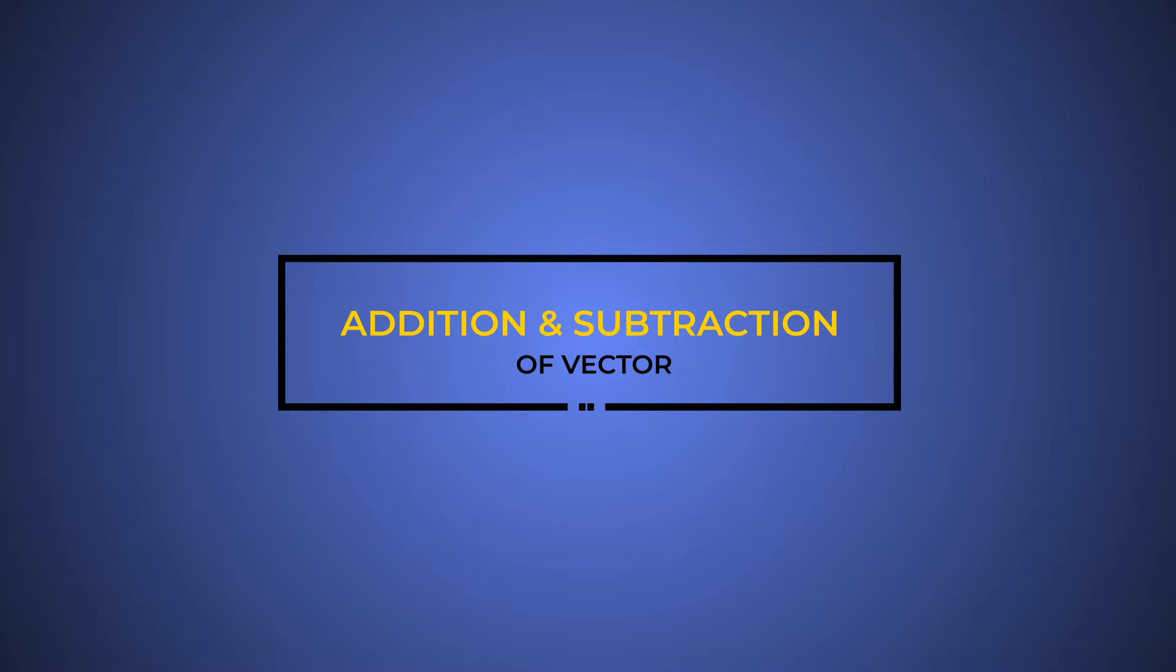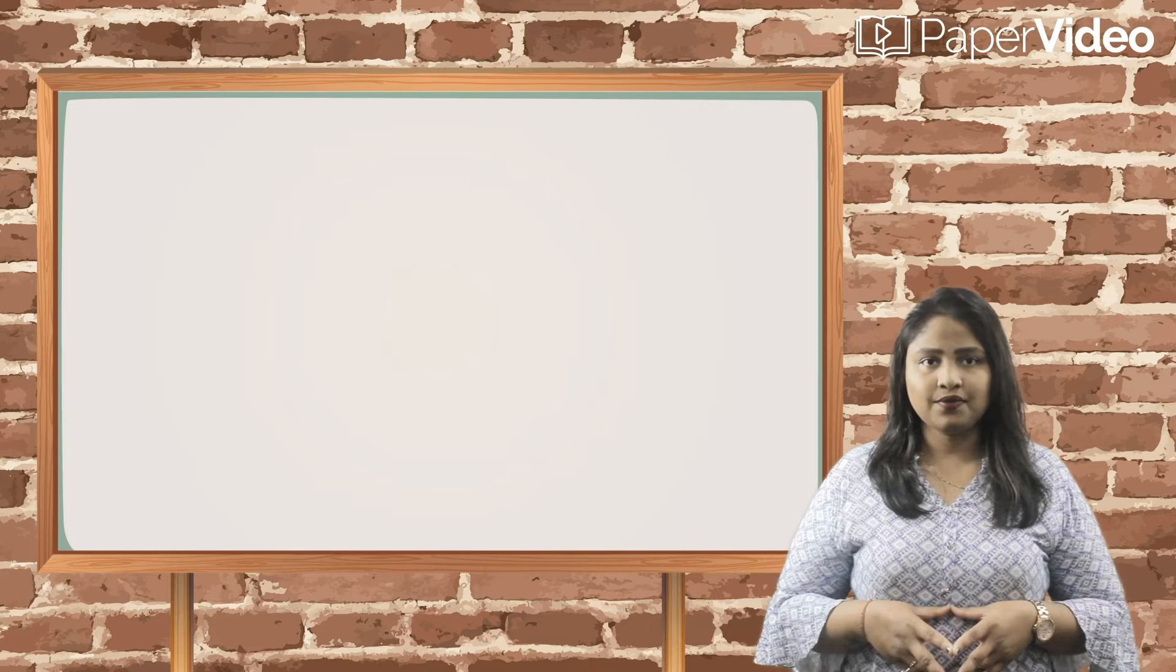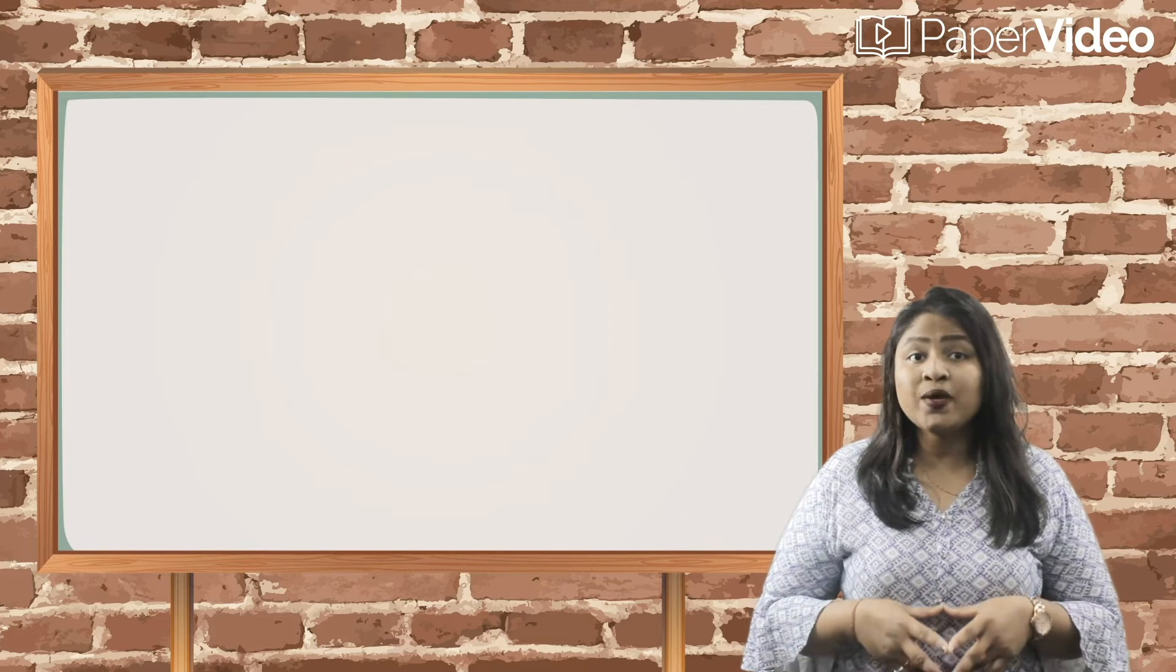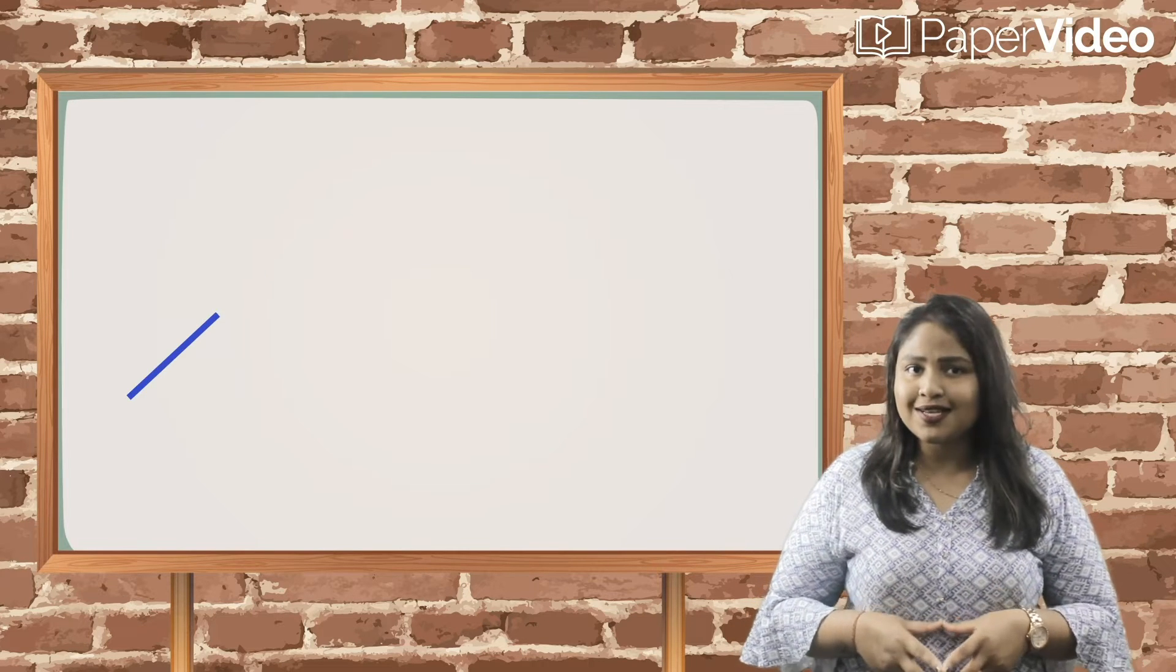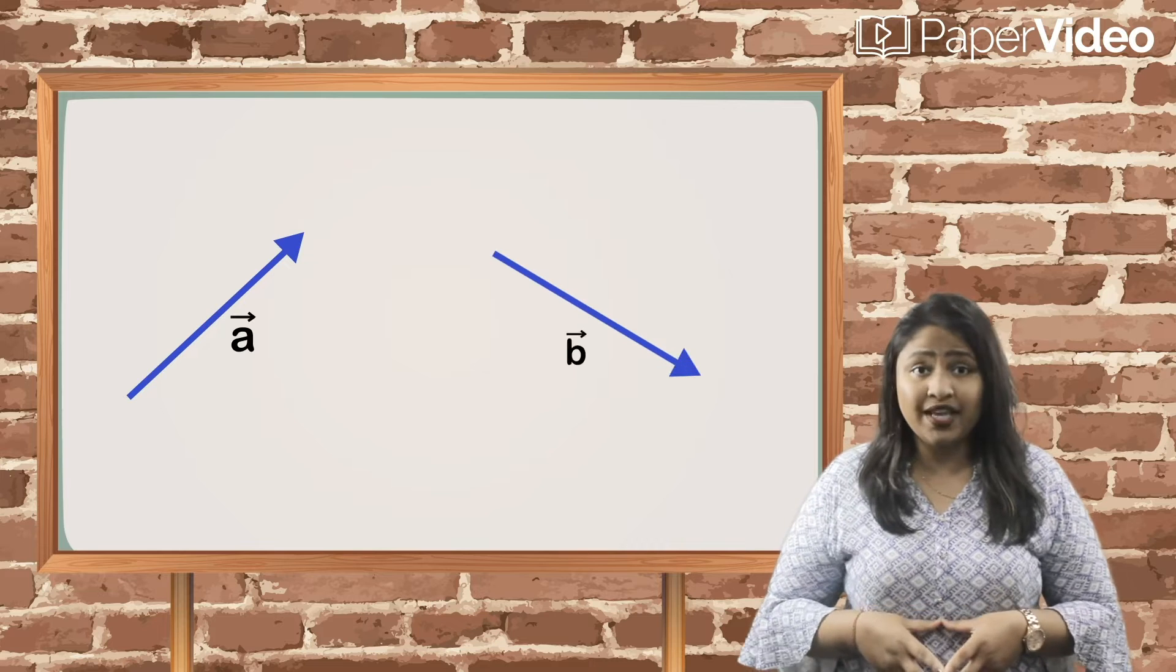Addition and subtraction of vectors. In our previous video, we discussed if we have two vectors, say vector A and vector B.